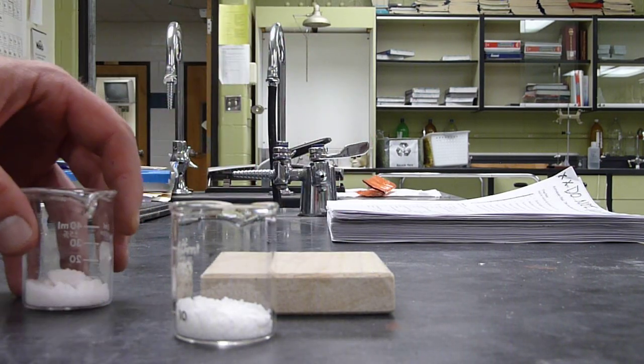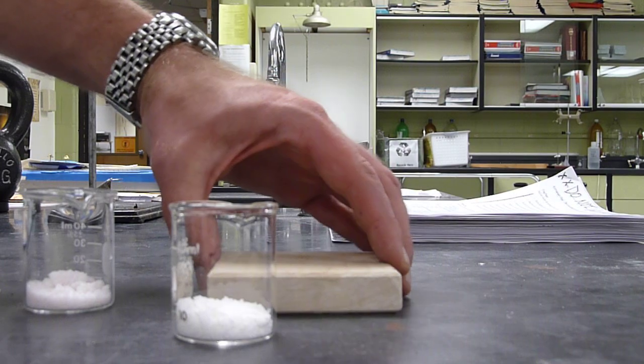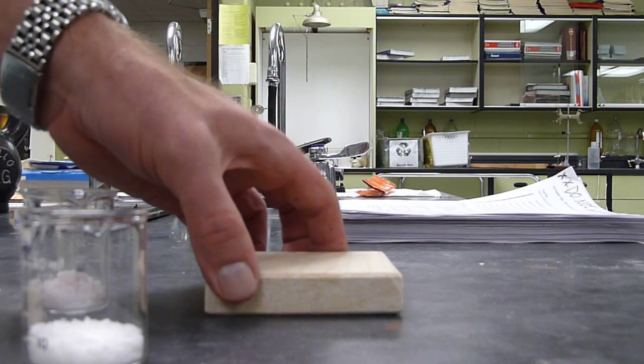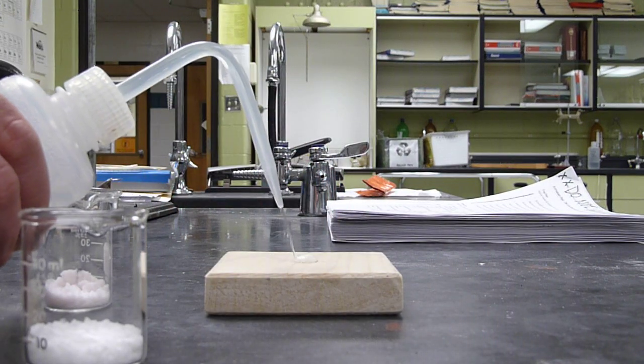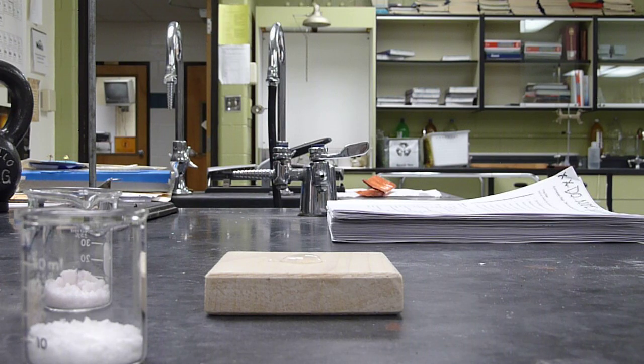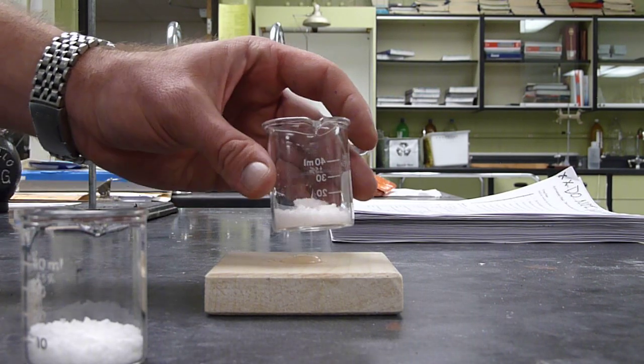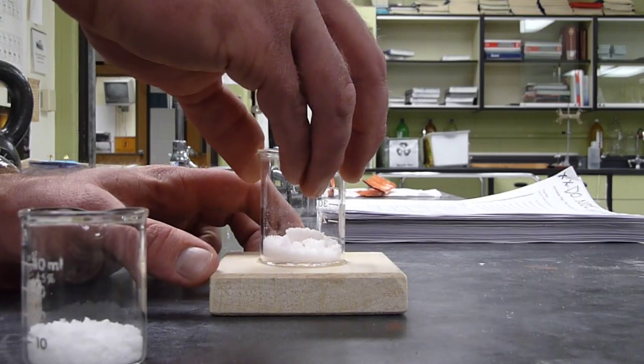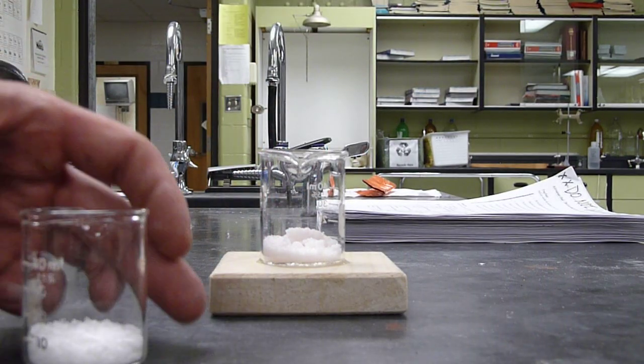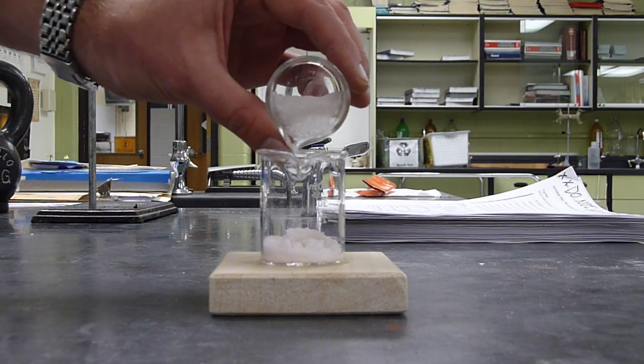So underneath it I just have a block of wood, and I'm just going to put a little bit of water on it, a little bead of water. And I'm going to set one of the beakers on top of the water and then add the other chemical to it. Get them reacting together.